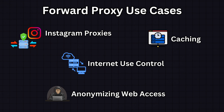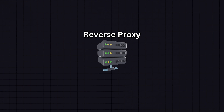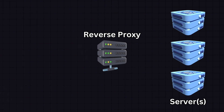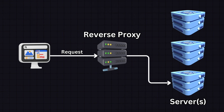Forward proxies can also be used for anonymizing web access. People concerned about privacy can use them to hide their IP address and other identifying information from websites they visit, making it difficult to track their browsing activities. On the other hand, a reverse proxy is a type of proxy server that sits in front of one or more web servers, intercepting requests from clients before they reach the servers. While a forward proxy hides the client's identity, a reverse proxy hides the server's identity, and the client interacts only with the reverse proxy, potentially unaware of the servers behind it.